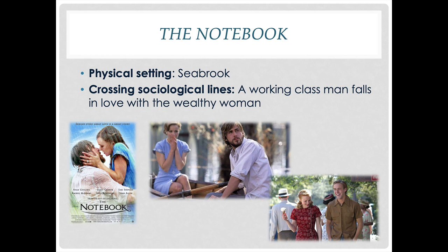A final example is the movie The Notebook. The physical setting is Seabrook, but again we get this crossing of sociological lines where a working-class guy falls in love with a wealthy woman. He understands how to be working class, but when he meets this woman and falls in love with her, all of a sudden he's got to figure out how to exist in a world where money really matters. His setting hasn't fundamentally changed — it's still Seabrook — but his setting in terms of sociological lines has changed. That puts limits and pressures on the character to grow, become better, learn about himself, and learn about what he wants in the world. Anytime characters change, they are called dynamic characters, and they learn — and then we learn from those changes as well.